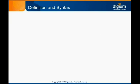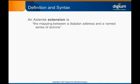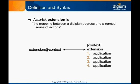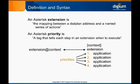An Asterisk extension is the mapping between a dial plan address and a named series of actions. The named series of actions, called applications, are tagged with a number according to the order in which they will execute. The tag that refers to each step on this numbered list is known as a priority. In other words, priorities are tags that tell each step in an extension when to execute.